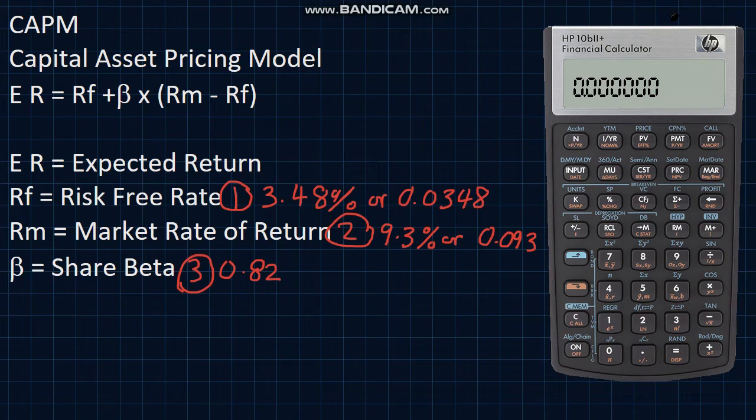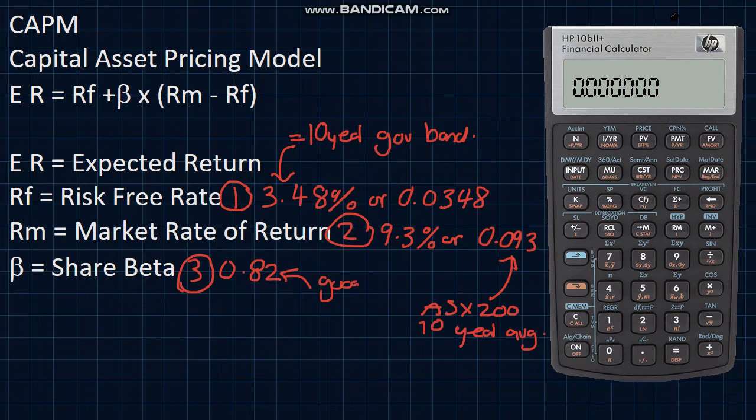So where do these values come from? A 10-year government bond yield is considered an investment that is risk-free, so we use that for the risk-free rate. The market average rate of return, I've used the 10-year average return of the ASX 200. And for a share beta, just Google it. I've used BHP's beta as an example here.